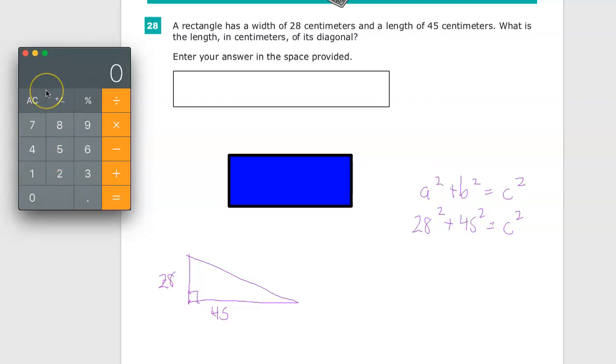Hopefully, your calculator is better than this one and has a button that will let you raise something to the second power. Mine does not. Fortunately, I know that that means multiplying it by itself. 784 plus 2025 is equal to C squared. Now, I'm ready to combine like terms. 2809 is equal to C squared.